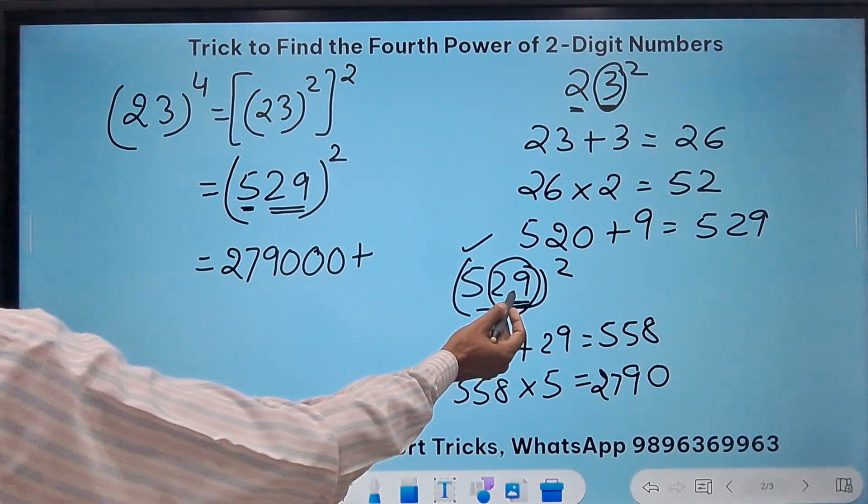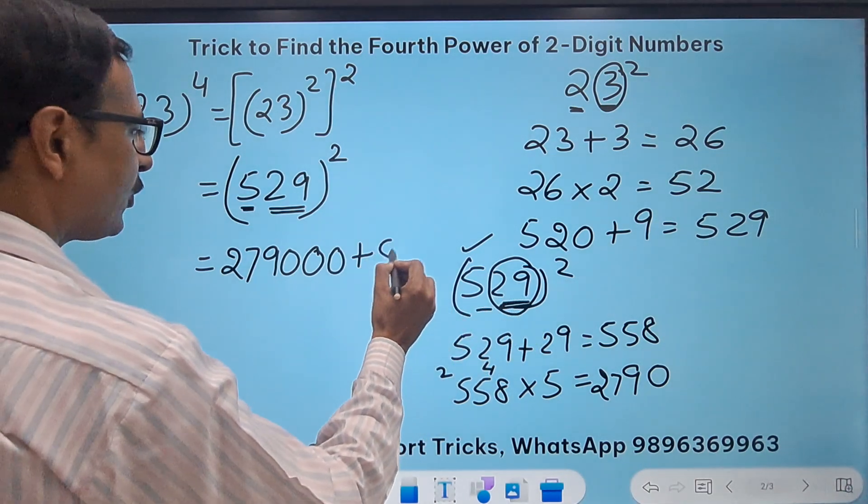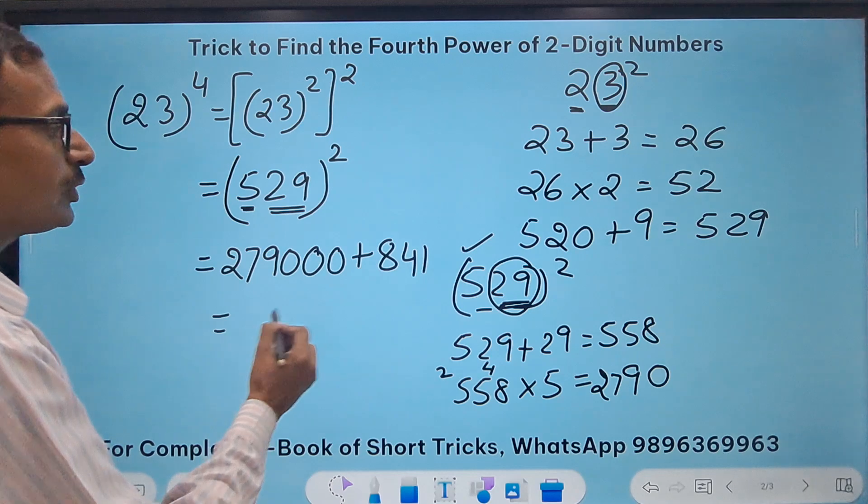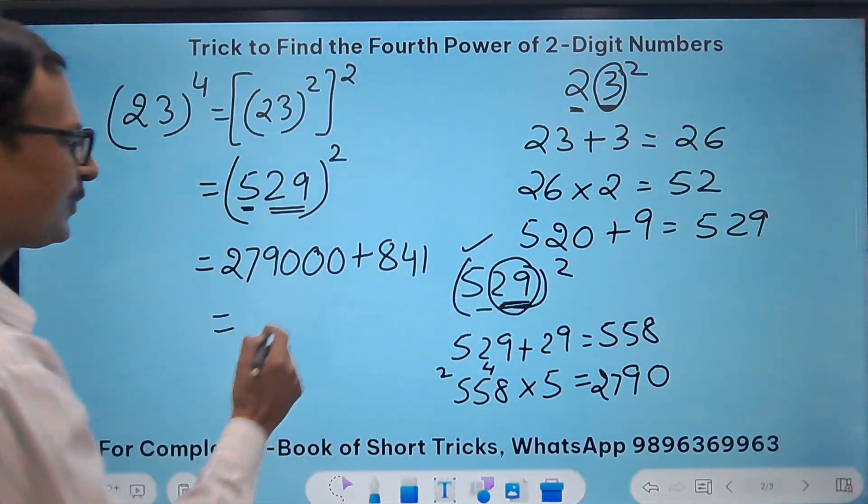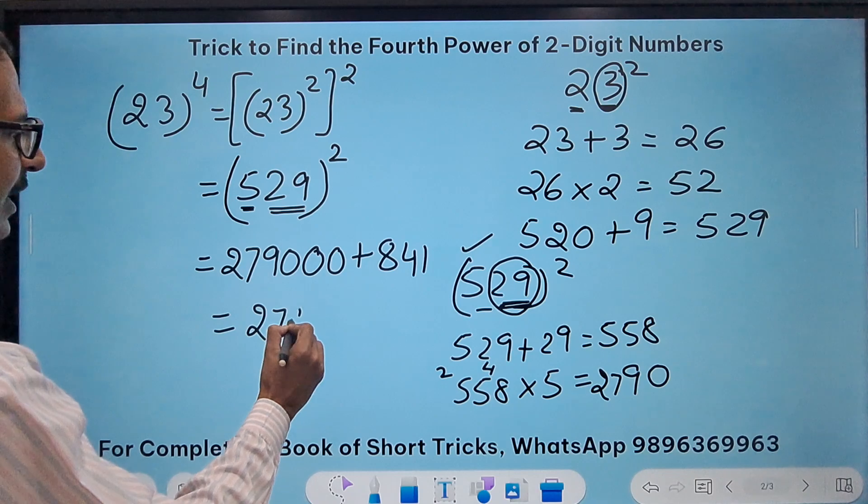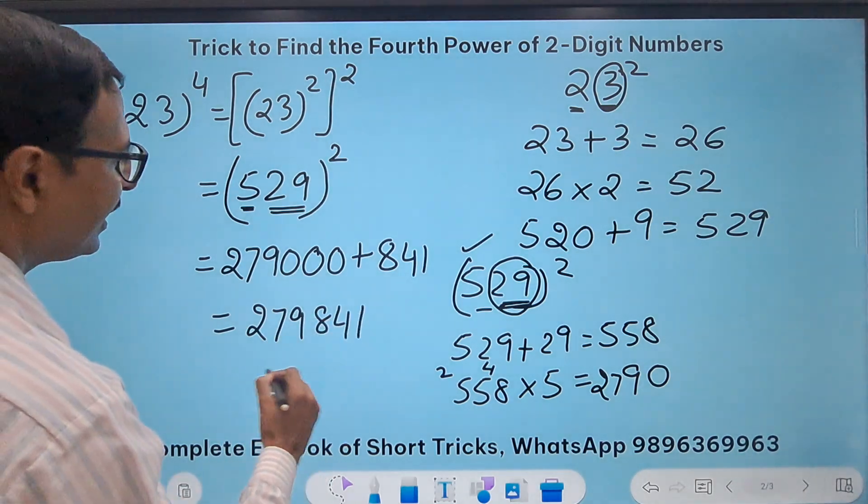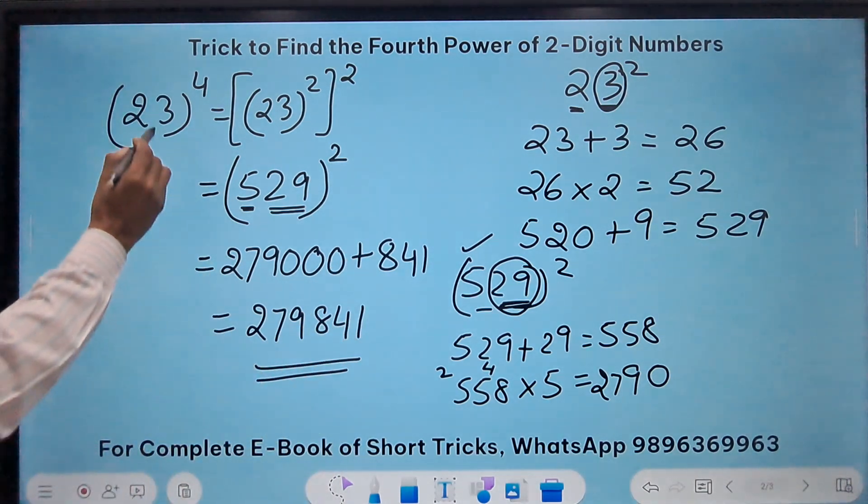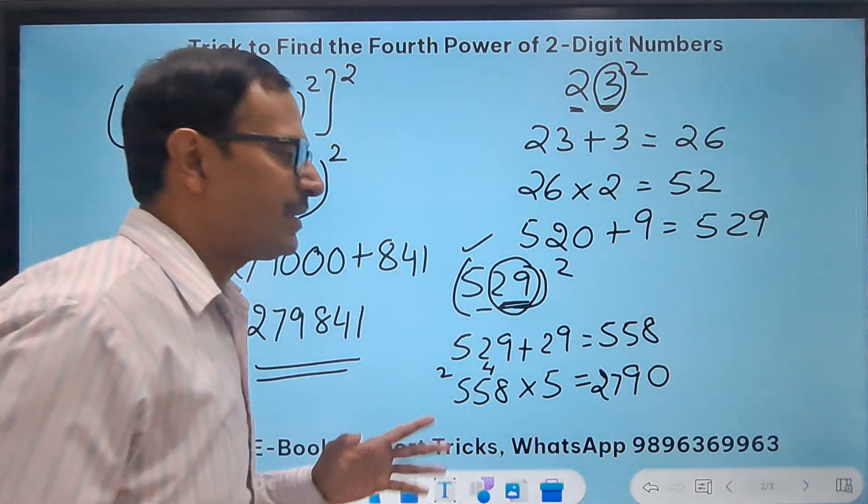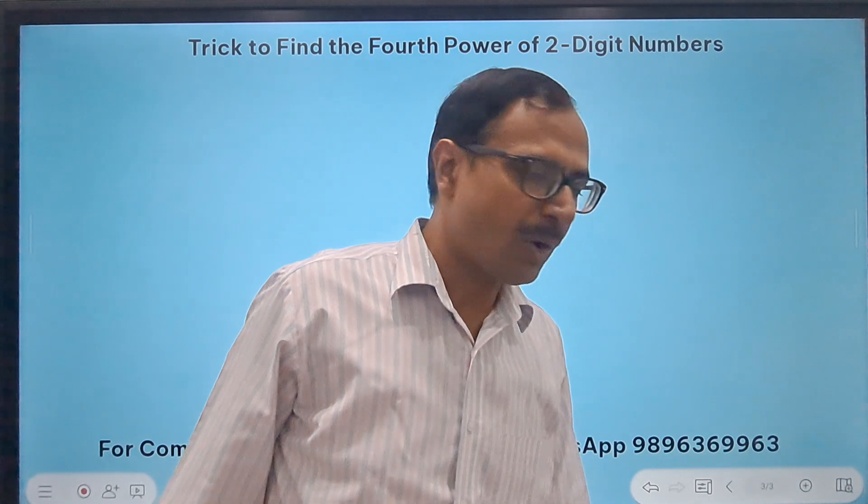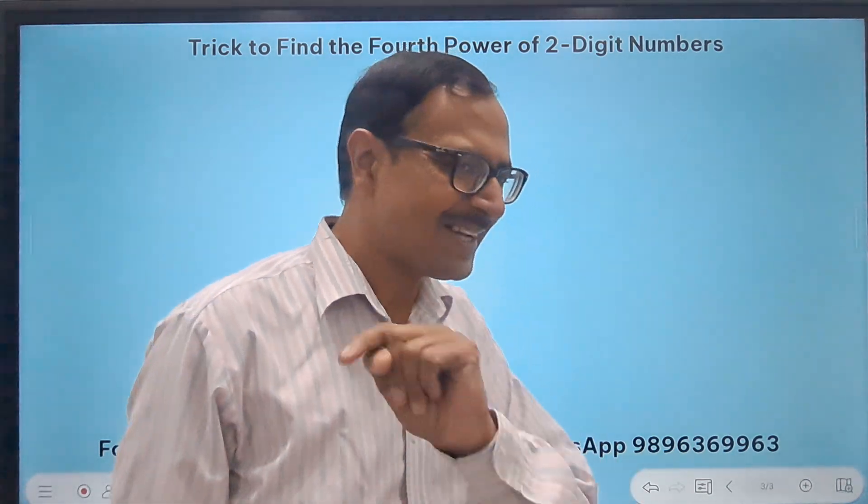How many digits did I take here? Two digits. So I will put two zeros and add the square of 29, that is 841, to the result. So the answer is 279,841. Just check using the calculator—is 23 raised to power 4 equal to 279,841?